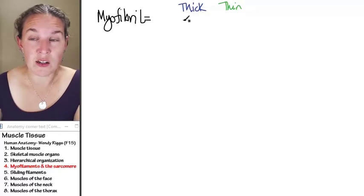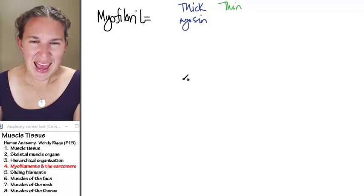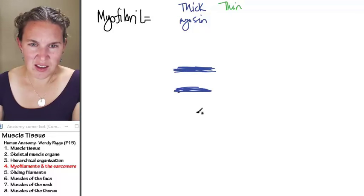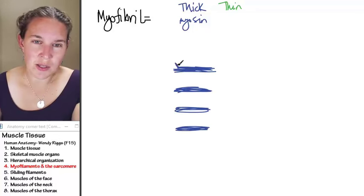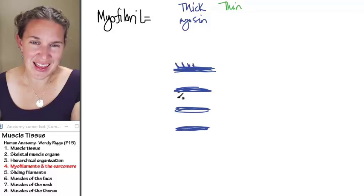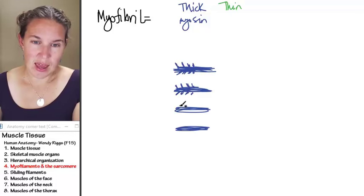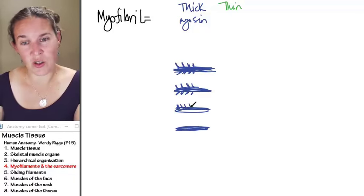Thick filaments are made of a protein called myosin. They actually have these little heads that attach to the thin filaments. They look like little arrows, and I have to draw the whole thing for you.